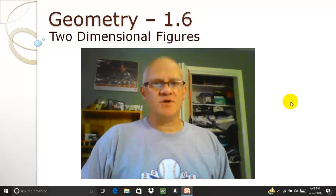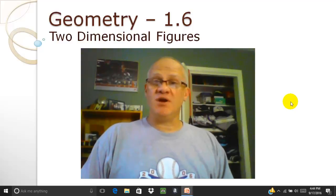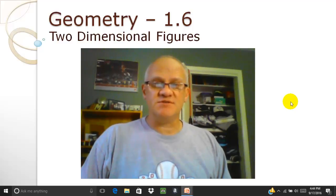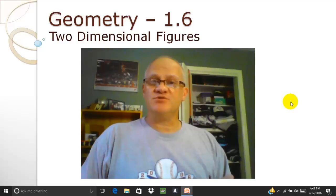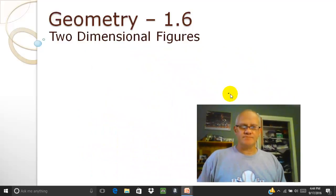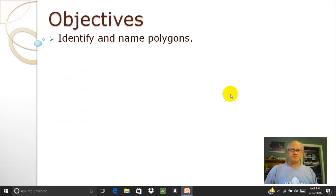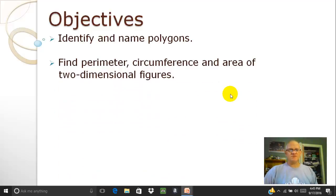Hey guys, it's Mr. A. Welcome to another edition in Geometry. We're in section 1.6 today and we're going to talk about two-dimensional figures. Our objectives are: we're going to identify and name polygons, and then secondly, we're going to find the perimeter, the circumference, and the area of these two-dimensional figures.